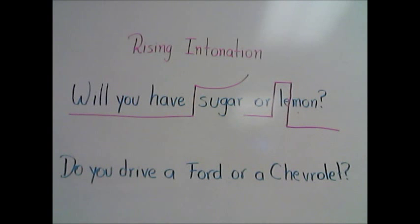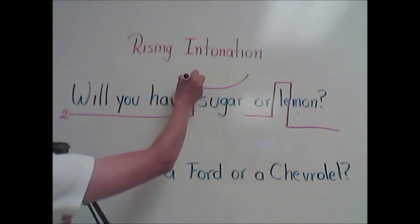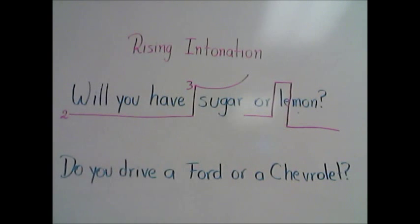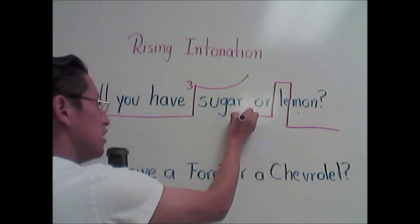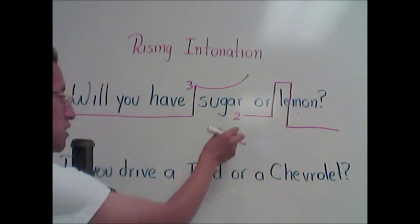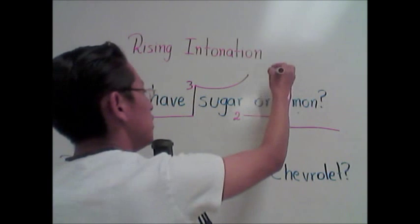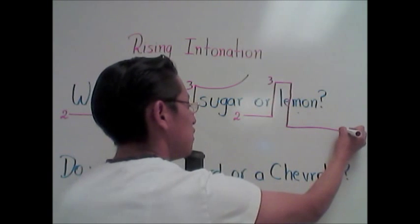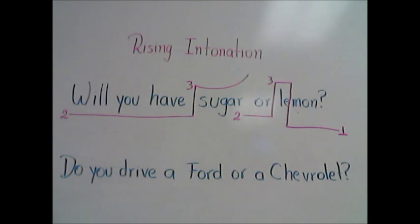As you can see here, the intonation pattern starts from tone number two, it rises to tone number three, and it ends there in the first alternative. But in the second alternative, the intonation pattern starts from tone number two, it rises to tone number three, and then it falls to tone number one. 'Will you have sugar or lemon?'